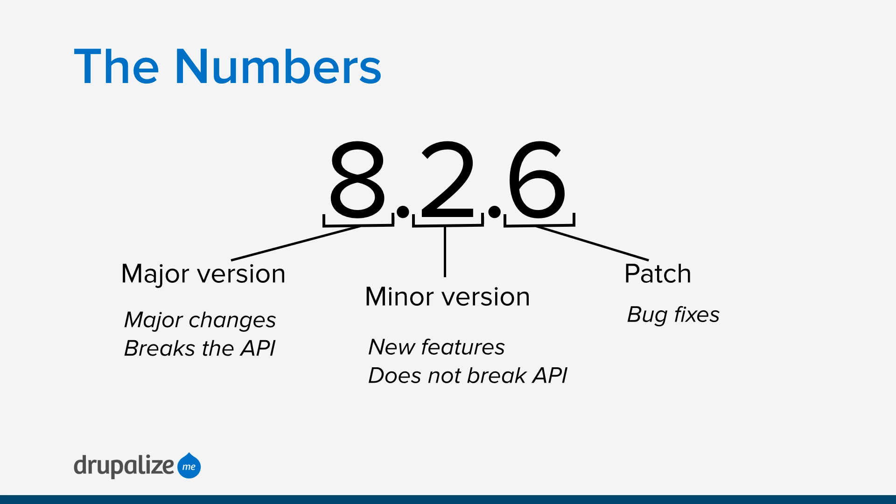So that is the basic numbering system — each number indicates a different kind of change. By looking at the number, you can immediately tell the state of the software. In this instance, we're on the eighth major version, so there have been seven changes that broke backwards compatibility in the past. We're on the second minor version, meaning there have been two feature additions made. And we're on the sixth bug fix or patch, so there have been six bug fixes to the second minor version.